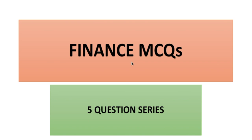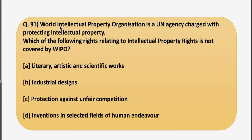Starting with the first question for today. The question says that World Intellectual Property Organization is a UN agency charged with protecting intellectual property. Which of the following rights relating to intellectual property rights is not covered by the World Intellectual Property Organization? Now for your understanding let us first discuss what intellectual property means.